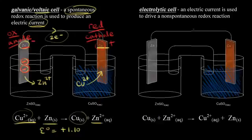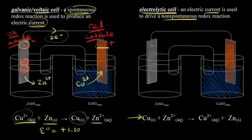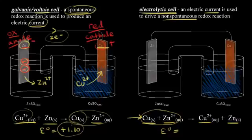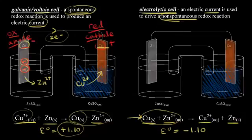Let's compare that voltaic cell to an electrolytic cell, shown on the right. An electrolytic cell uses an electric current to drive a non-spontaneous redox reaction. If we look at the overall reaction, we're starting with solid copper and zinc two plus ions in solution, going to copper two plus ions in solution and solid zinc. This is the reverse of the reaction we just talked about — the reactants here were the products there. To find the standard cell potential, we take the negative of the previous value since we reversed the reaction, giving us negative 1.10 volts.